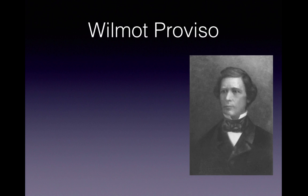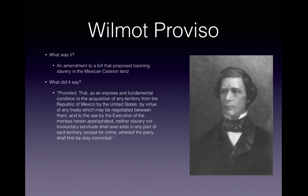The Wilmot Proviso was an amendment authored by David Wilmot that proposed banning slavery in the Mexican Cession lands. It stated: 'As an express and fundamental condition to the acquisition of any territory from the Republic of Mexico by the United States, neither slavery nor involuntary servitude shall ever exist in any part of said territory, except for crime whereof the party shall first be duly convicted.'